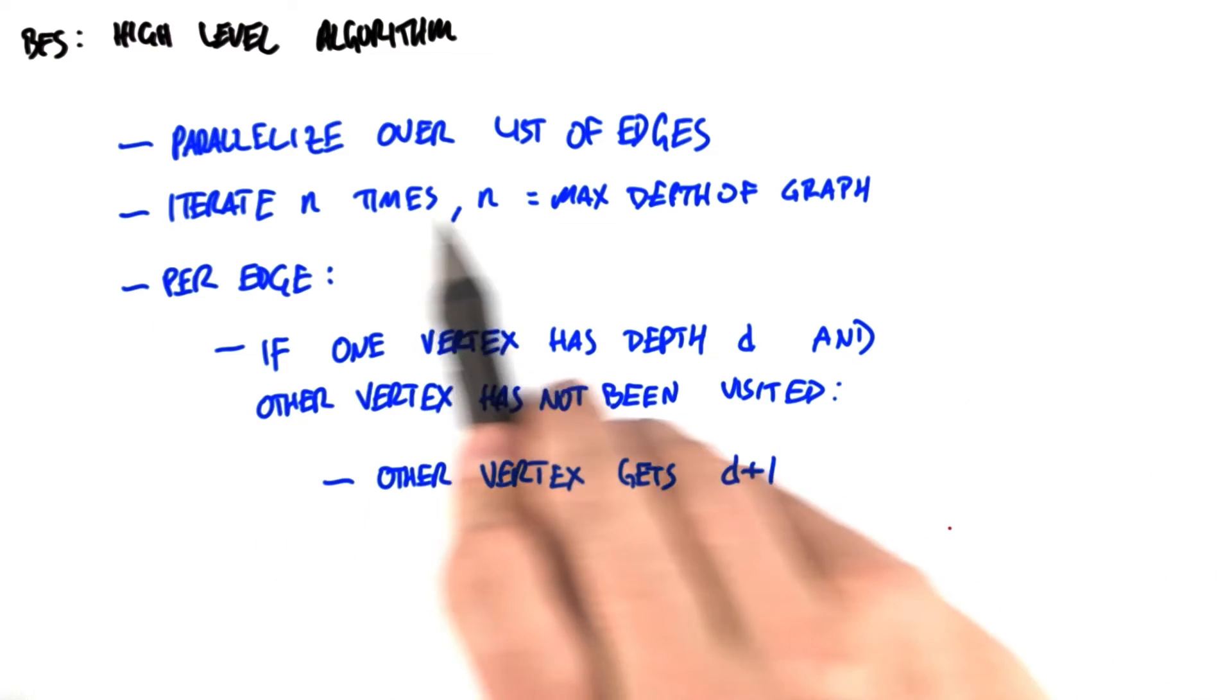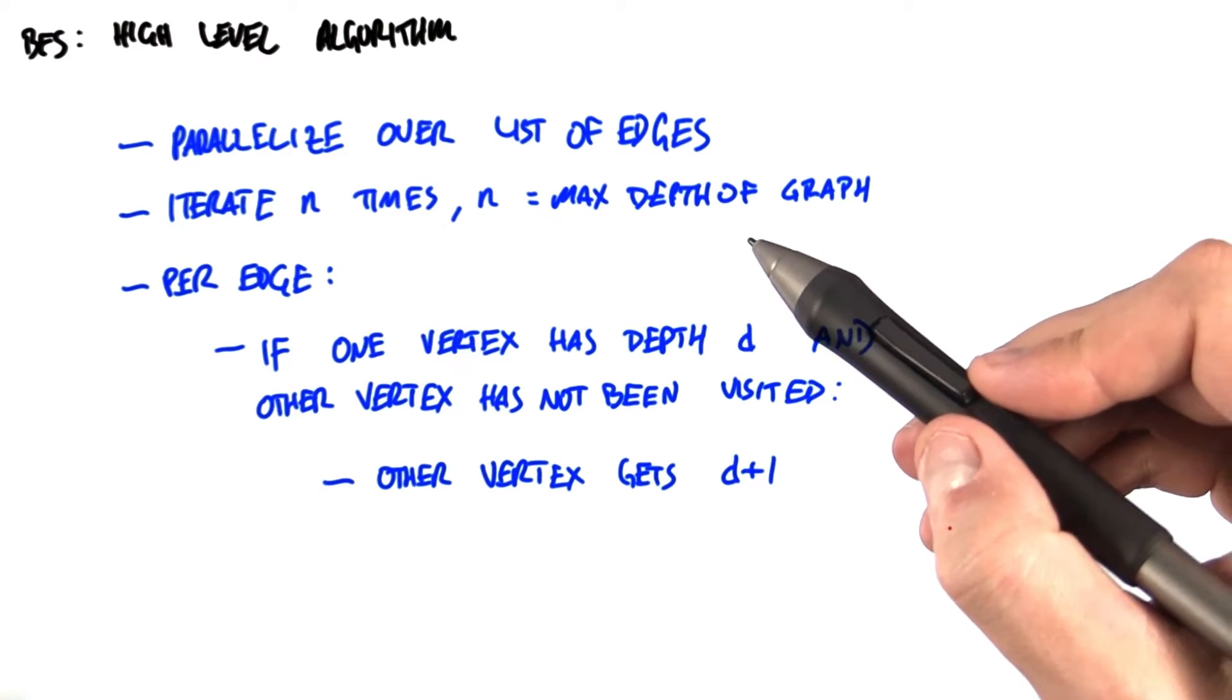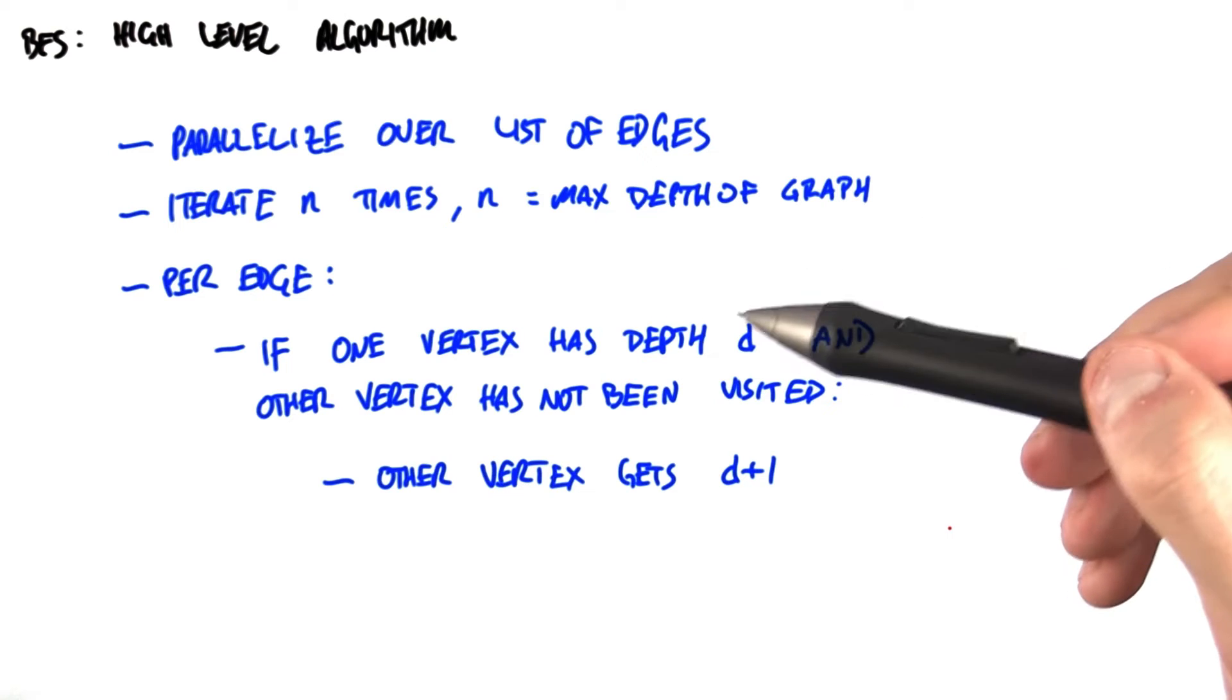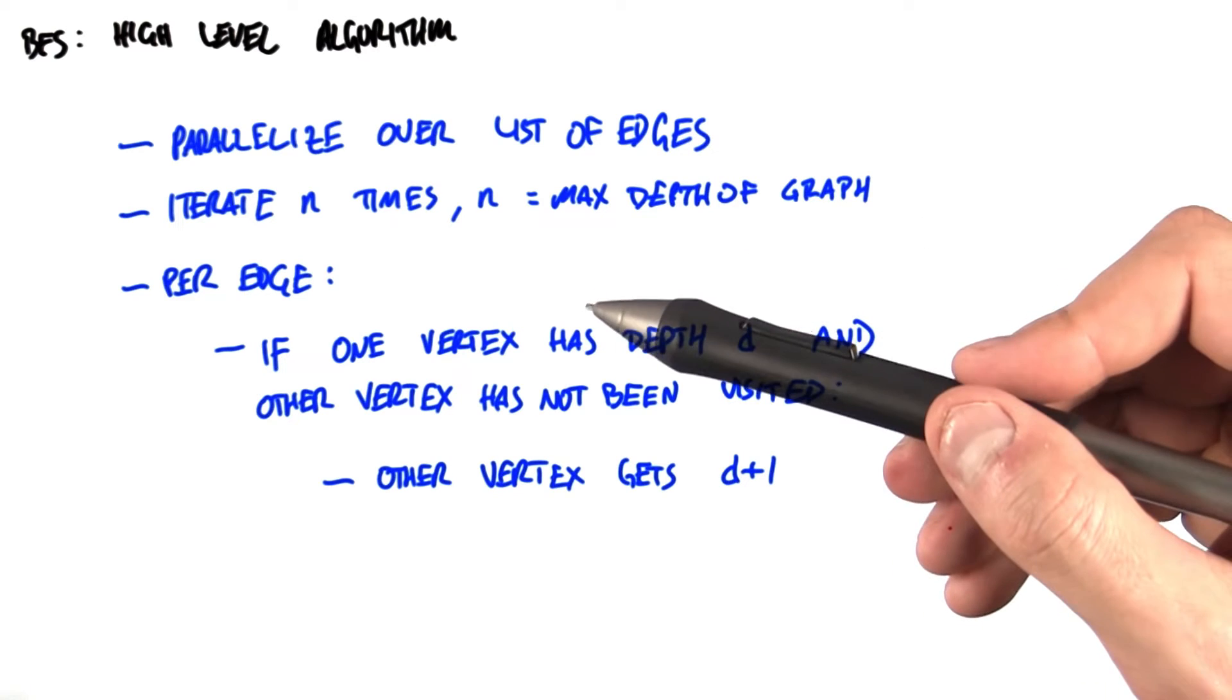So at a high level, we're going to operate over our list of edges. And we're going to iterate n times, where n is the maximum depth of the graph.